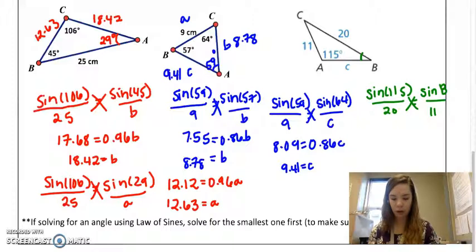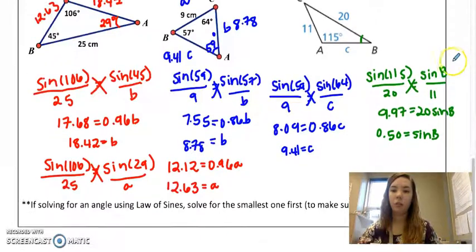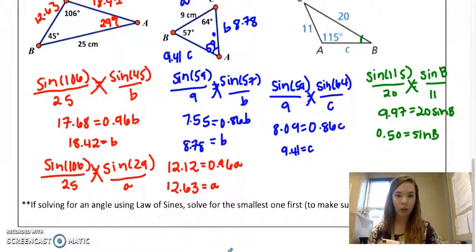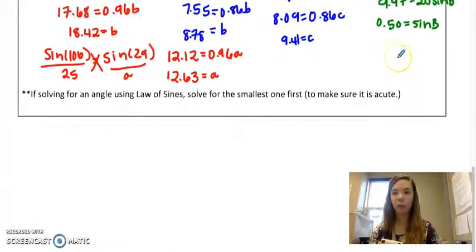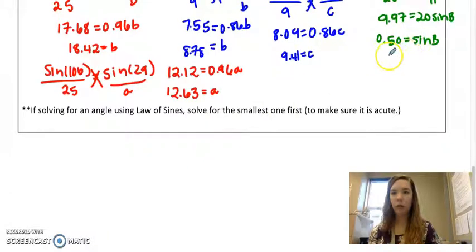So 11 sine of 115 is 9.97 equals 20 sine b. Then we divide that by 20, so that's 0.50 equals sine b.